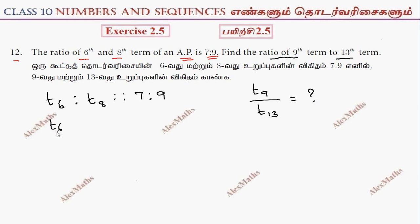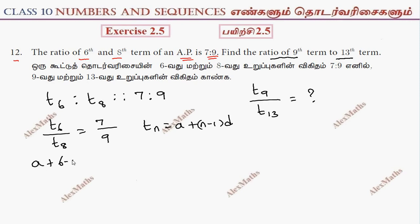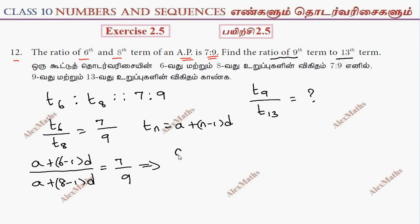Using the formula Tn = a + (n minus 1) into d, T6 by T8 gives us A plus 5d by A plus 7d, and this is equal to 7 by 9.